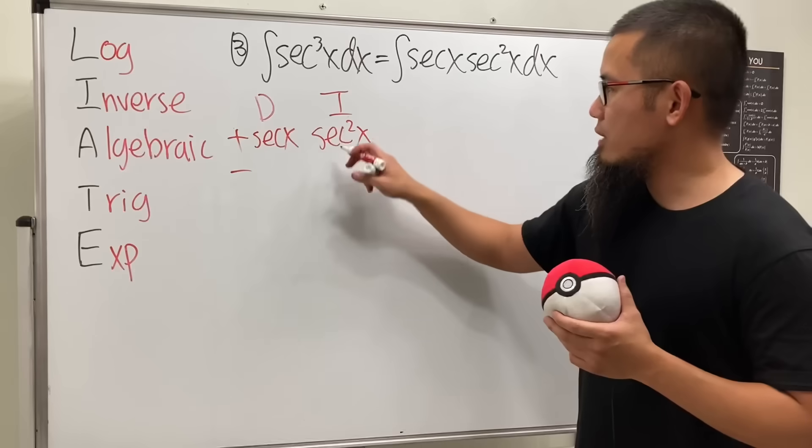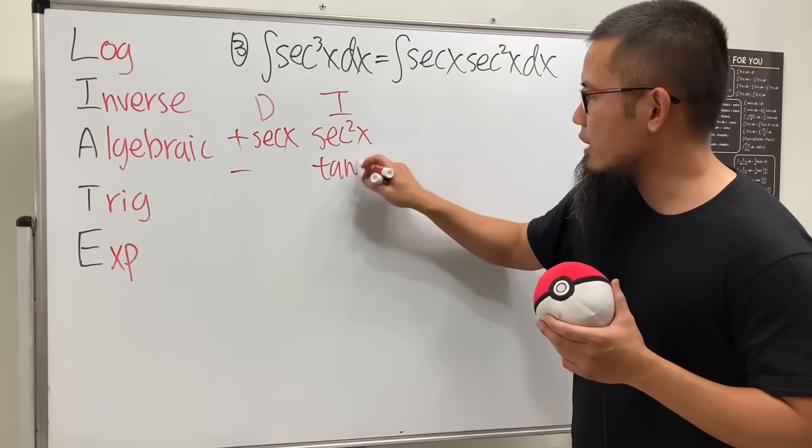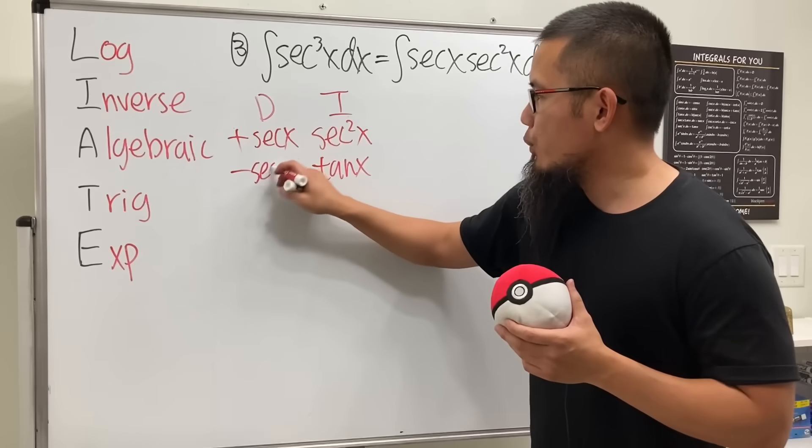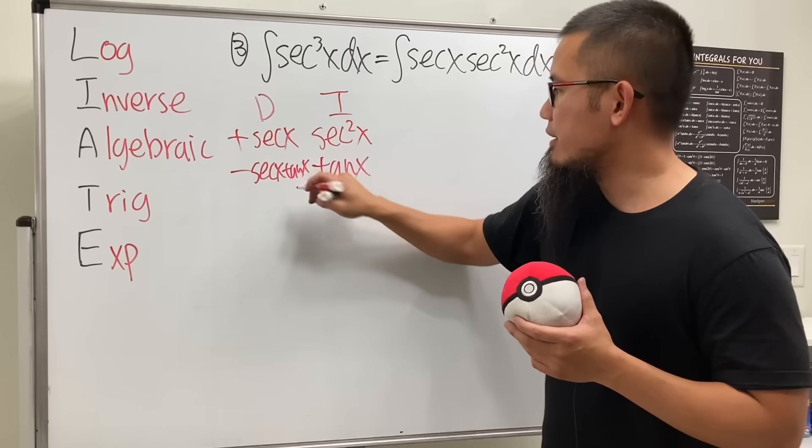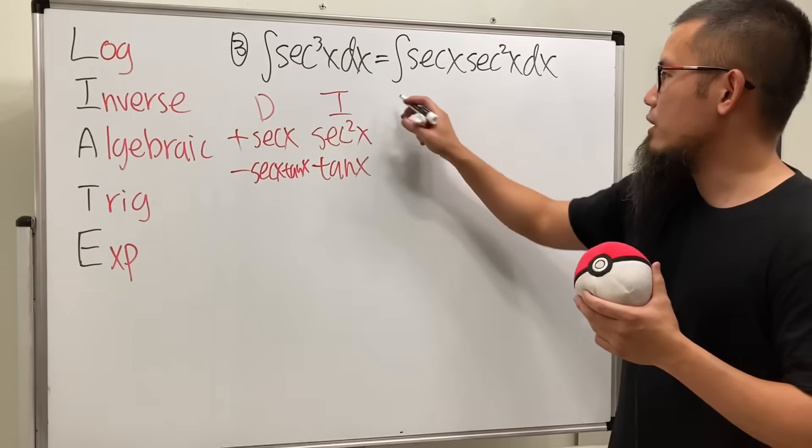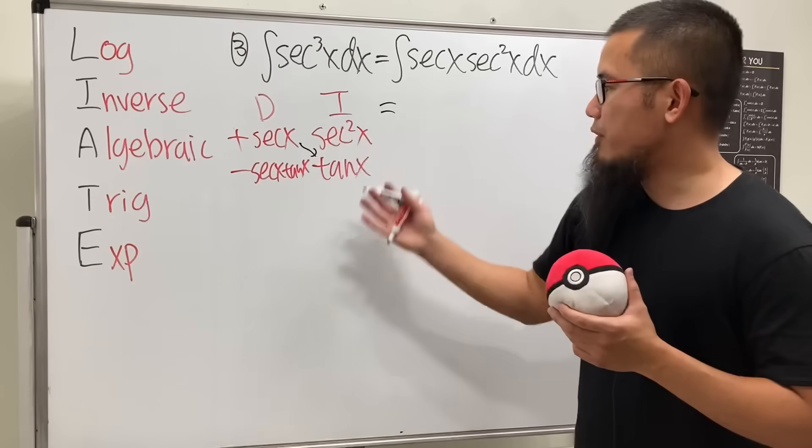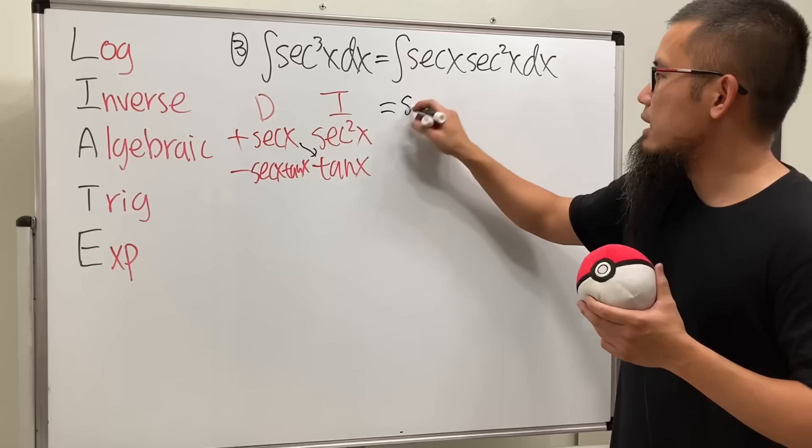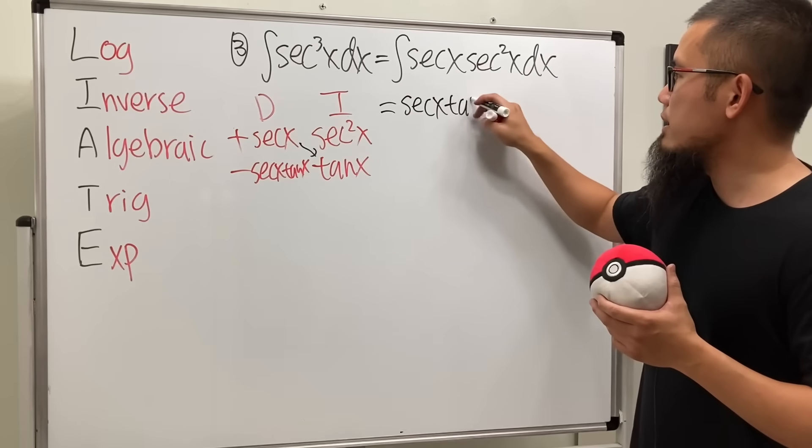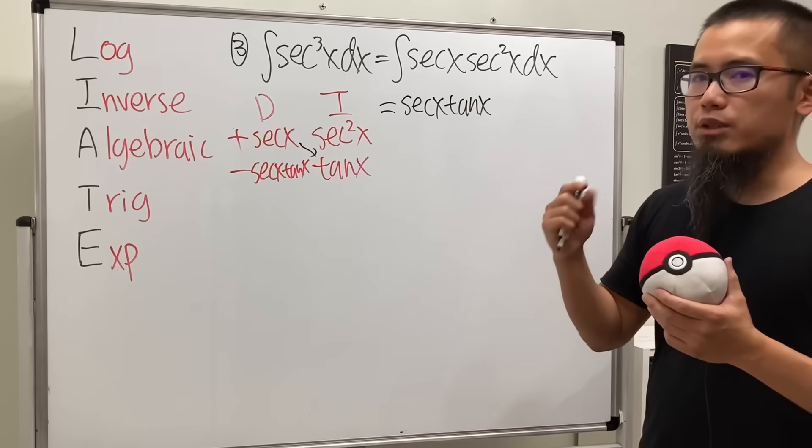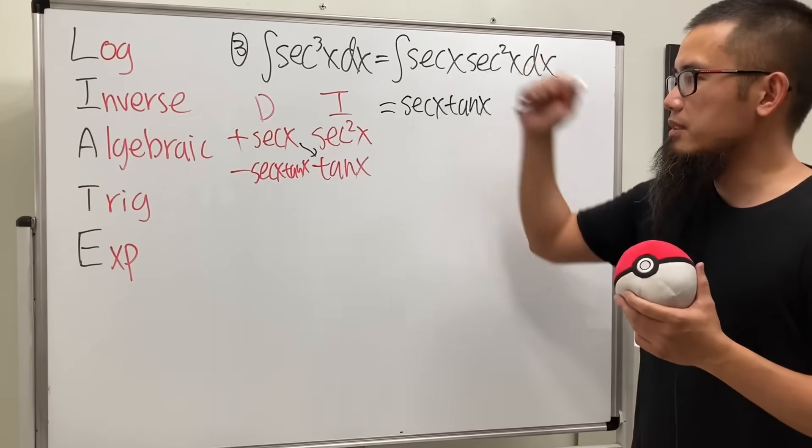It works. So integrating this, we get tangent x and differentiating that, we get secant x times tangent x. Ladies and gentlemen, this times this is the first part of the answer and we get secant x times tangent x. That's how we squeeze out the first part of the answer for this integral.